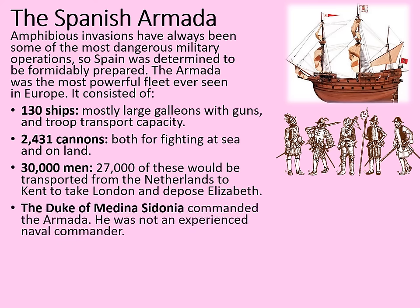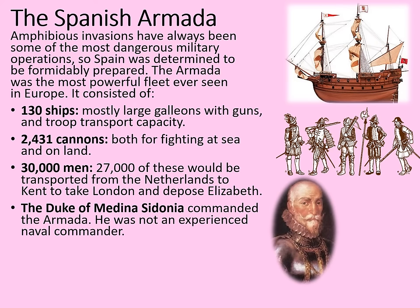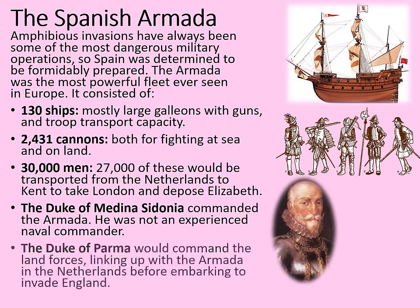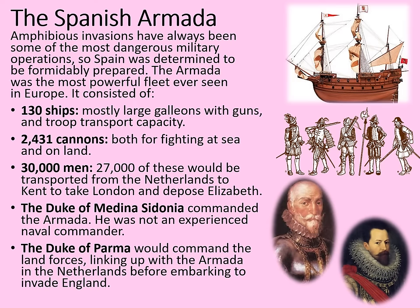The Duke of Medina Sidonia commanded the Armada, but he was not an experienced naval commander — more of a land-based commander. The Duke of Parma would command the land forces, linking up with the Armada in the Netherlands before embarking to invade England. So the plan was: bring the Armada to the Netherlands, load the Duke of Parma's army, take it to England, take London, remove Elizabeth, and take over. Simple, supposedly.